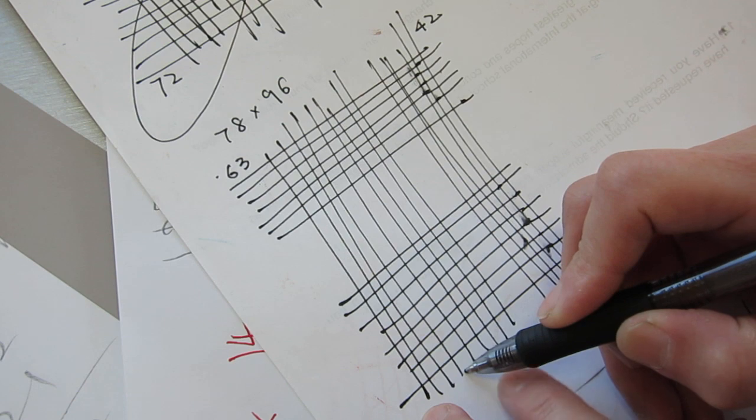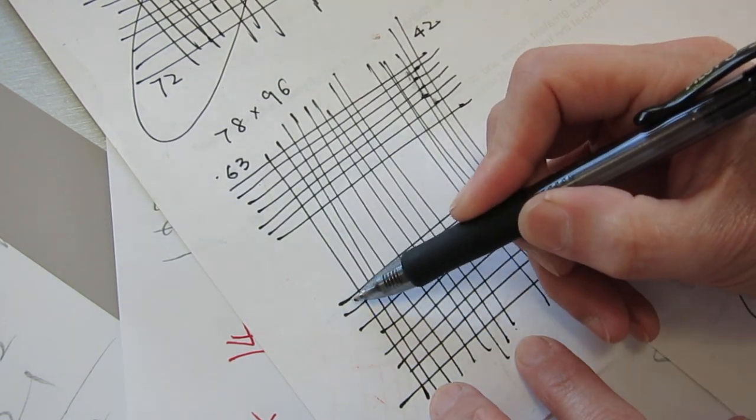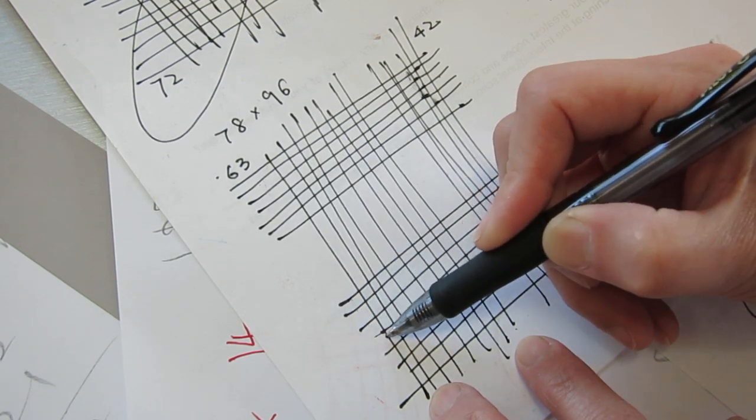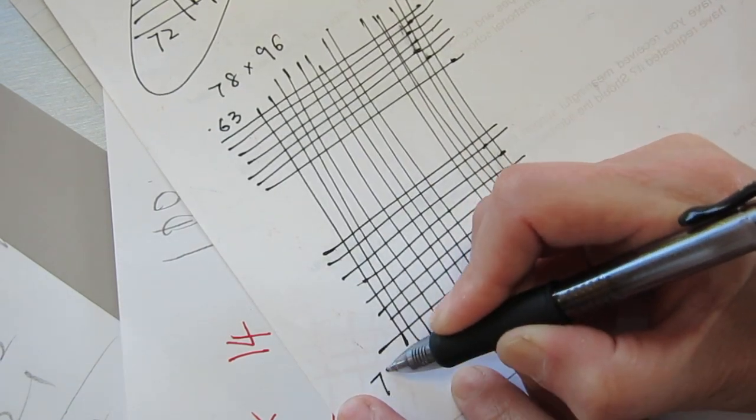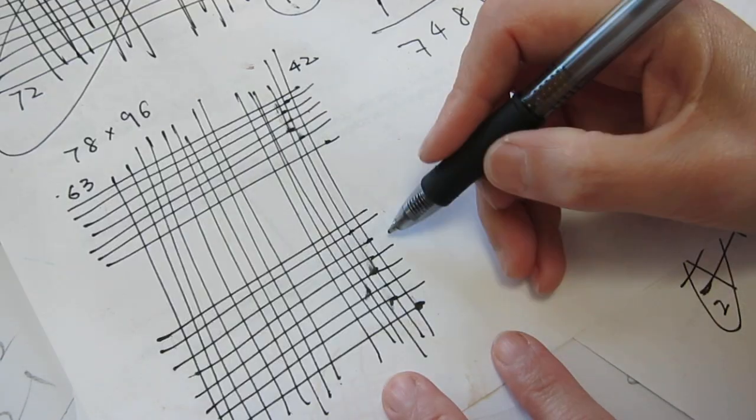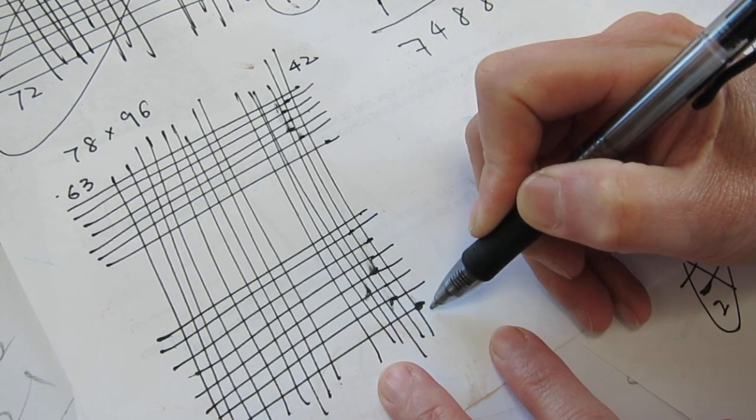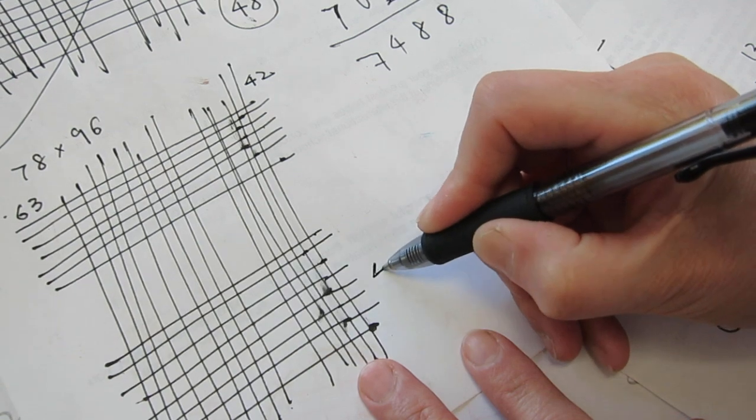And this one on this side is 8. Is 1, 2, 3, 4, 5, 6, 7, 8, 9. 9 plus 1, 2, 3, 4, 5, 6, 7, 8. Not plus, times. 1, 2, 3, 4, 5, 6, 7, 8. 9, 8, 72. And this one is 8. On this side, 6. 8, 6 is 48. Right?